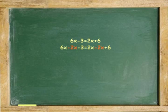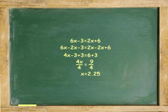Subtract 2x from both sides. Add 3 to both sides. Divide both sides by 4. x equals 9 over 4 or 2.25.